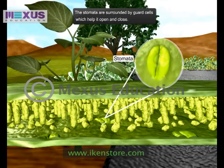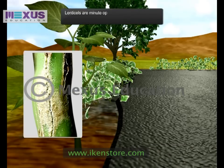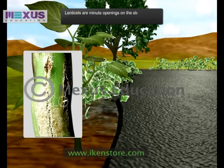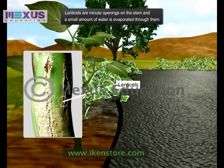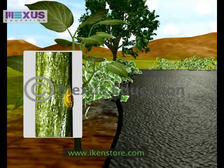Lenticels are minute openings on the stem and a small amount of water is evaporated through them. This is called lenticular transpiration. Lenticels are less in number as compared to the stomata.